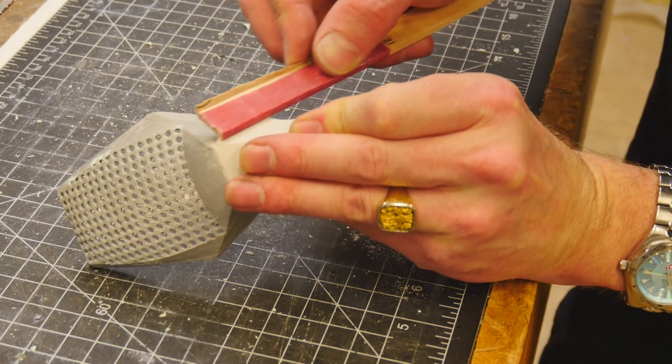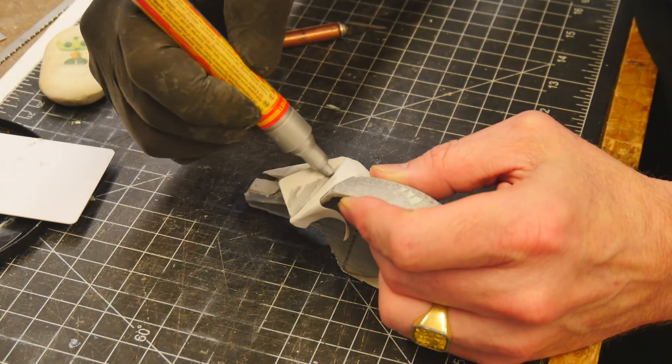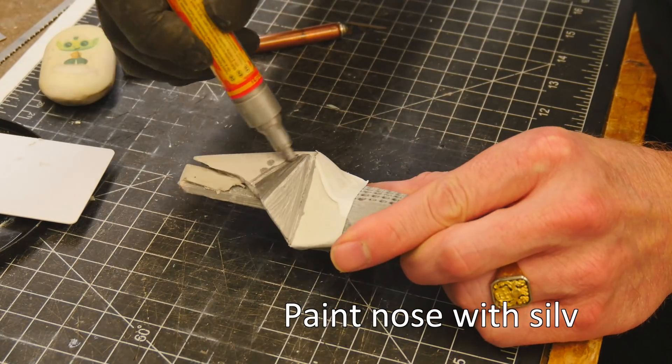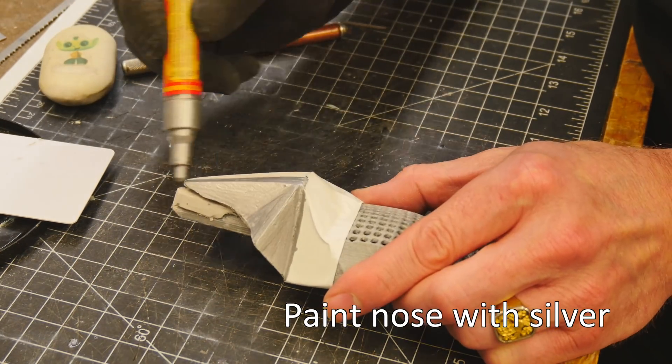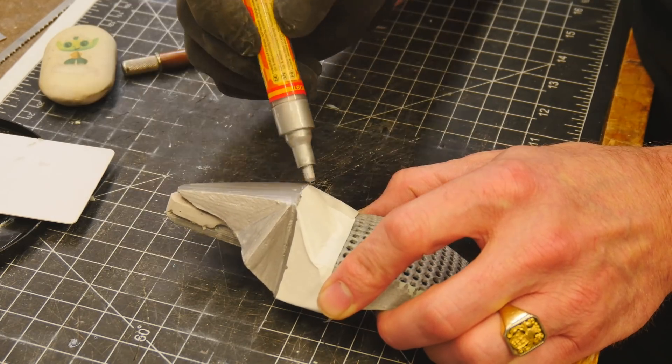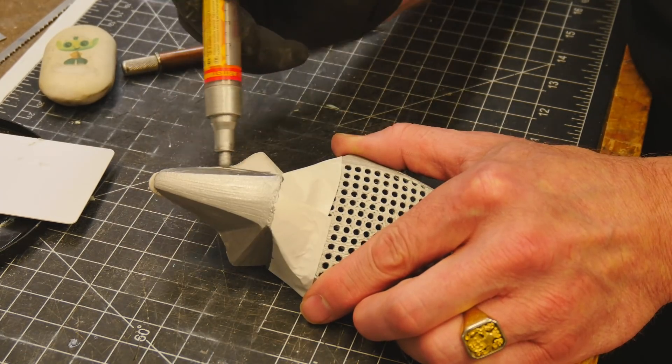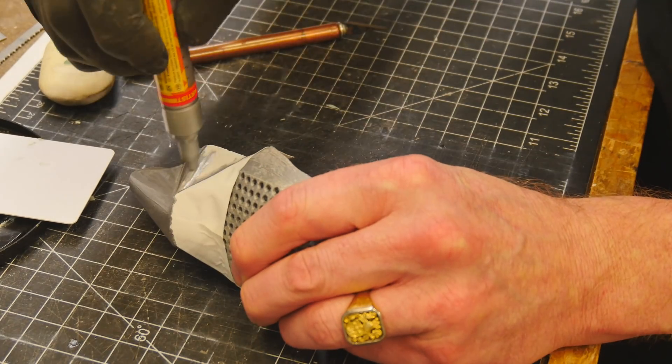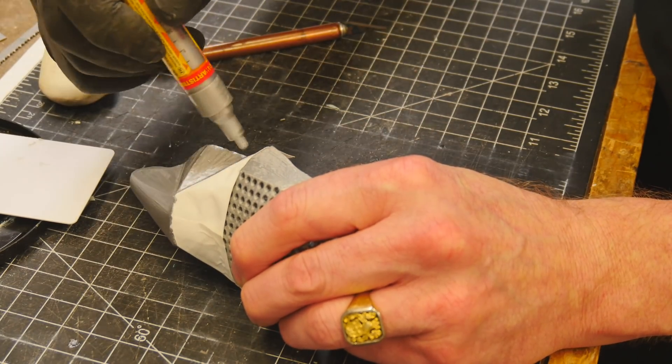Ultimately I am switching to sandpaper, 120 grit so it's pretty rough. I want the texture of the body filler to be close to the texture of the 3D printed part, so I'm okay with some scratches and rough surface.